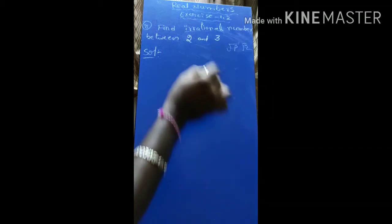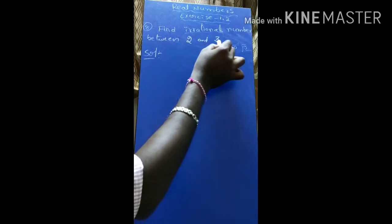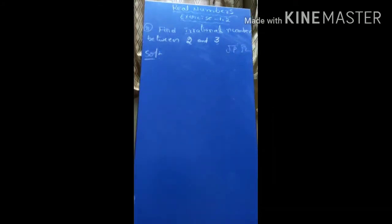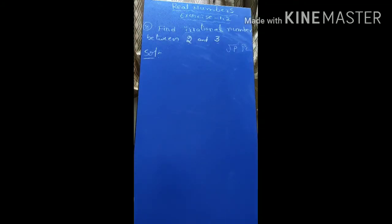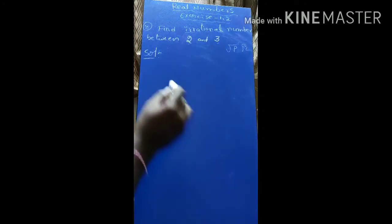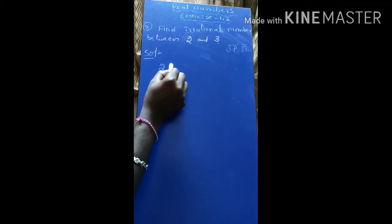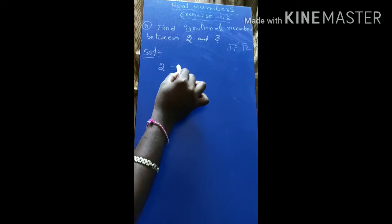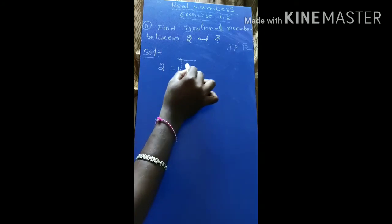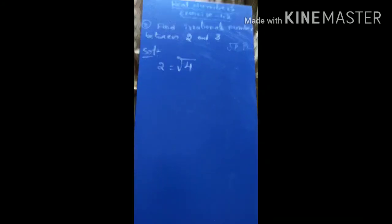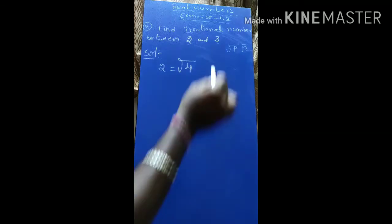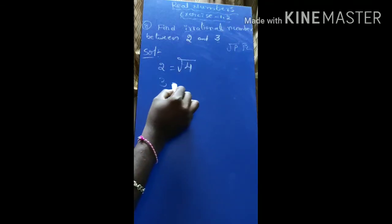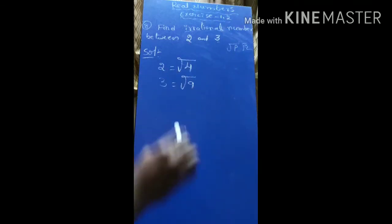So first, these two numbers 2 and 3 are rational numbers. We are going to convert these two numbers into irrational numbers. 2 is rational; when we convert it, that is equal to root 4. And also 3, if you convert, that is equal to root 9.